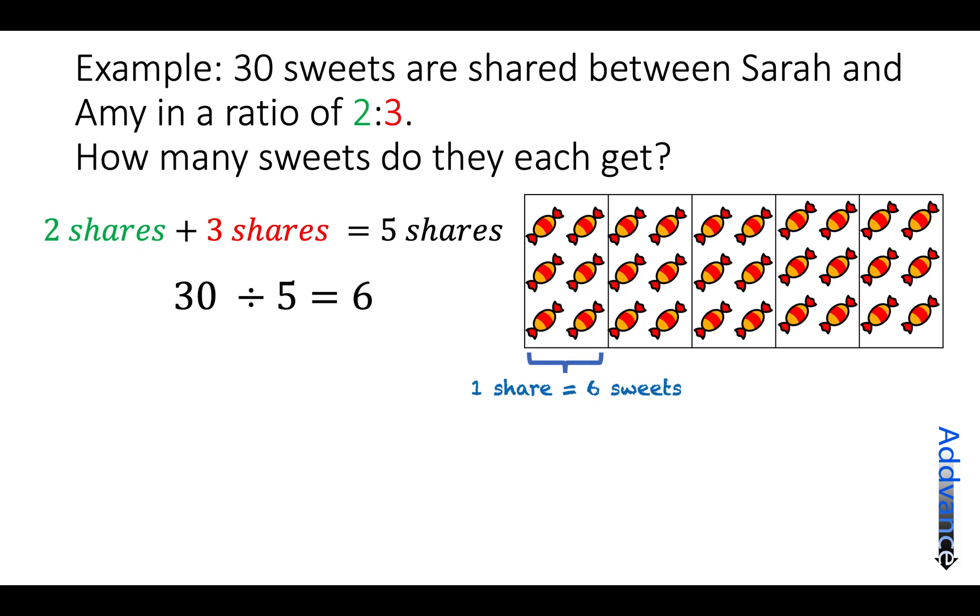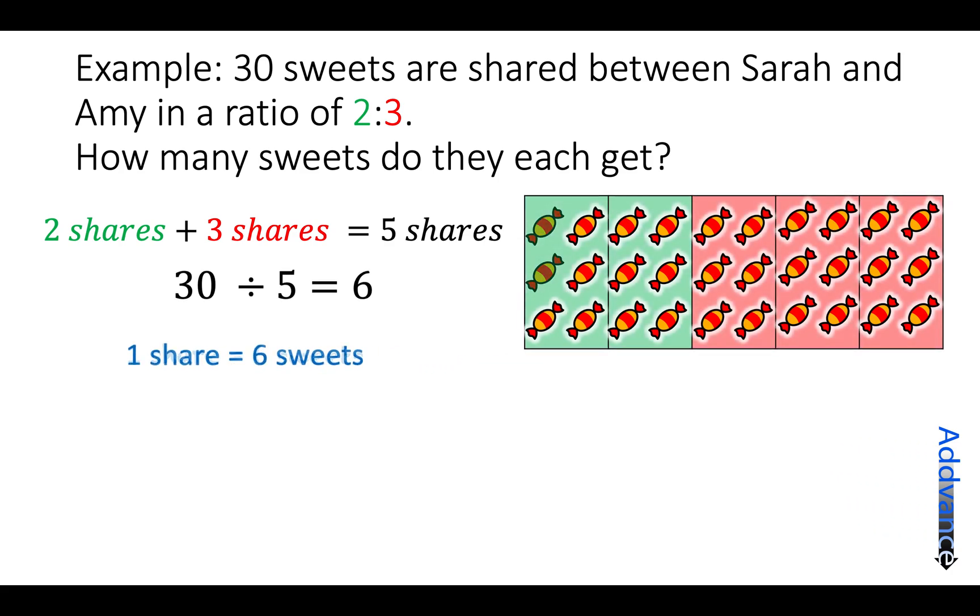So you can see that 1 share of sweets is 6 sweets in total. So 1 share is 6 sweets. To find 2 shares we times by 2 and get 12 sweets. 2 shares is 12 sweets.